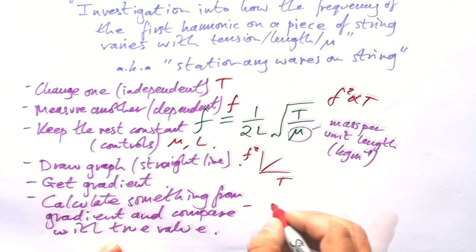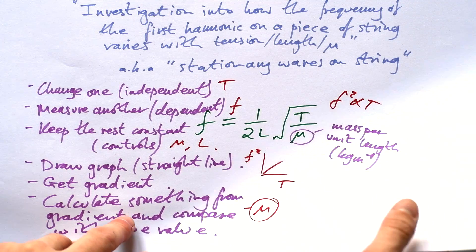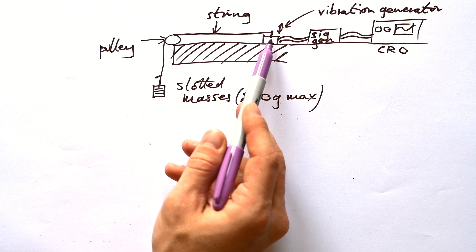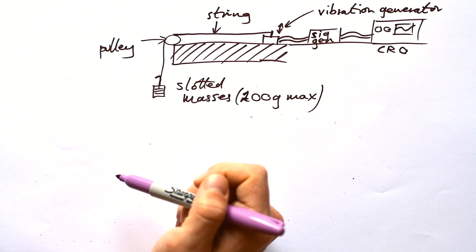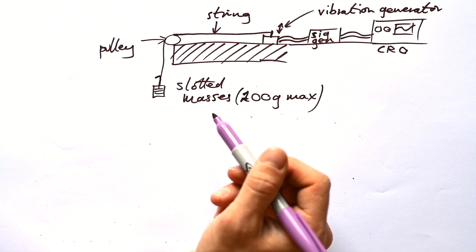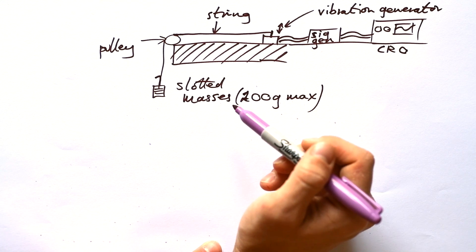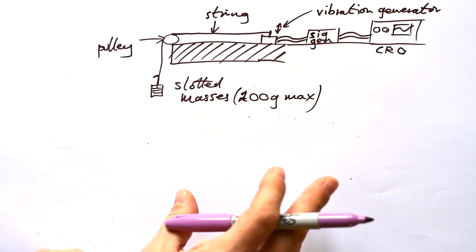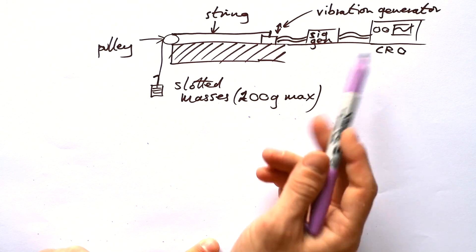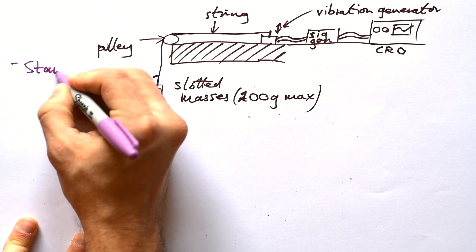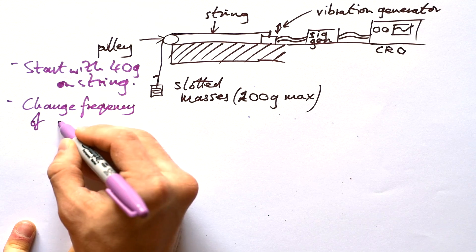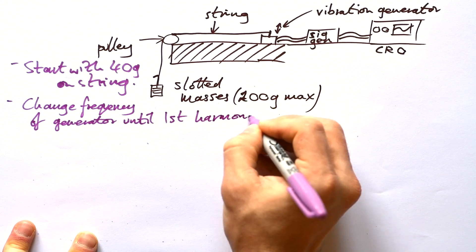We're going to calculate mu from the gradient and compare with the true value. So here's the setup: we have a piece of string going from a vibration generator over a pulley at the edge of the table with slotted masses hanging on the end — only up to 200 grams, otherwise the vibration generator might break. We have a signal generator driving the vibration generator, also hooked into a cathode ray oscilloscope (CRO) that allows us to see the waveform being put into the vibration generator. That's how we find our frequency. We start with maybe 40 grams on the string, then change the frequency of the generator until the first harmonic appears on the string.